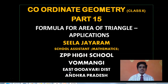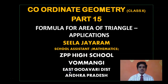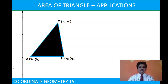Good morning students. Welcome to part 15 of the chapter Coordinate Geometry. In the previous part, we derived the formula to calculate the area of a triangle when the three vertices are given. In this class, we will apply the formula to calculate the area of the given triangle whose vertices are A(x1, y1), B(x2, y2) and C(x3, y3).